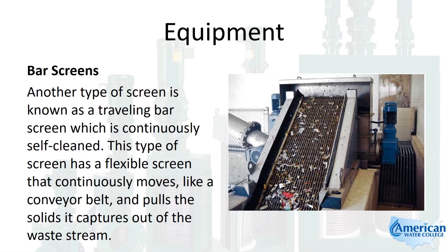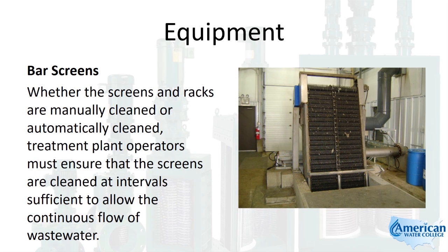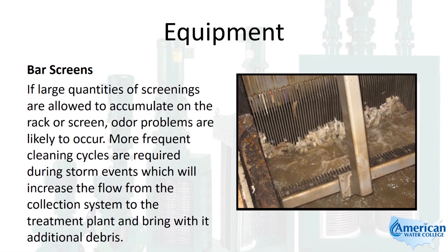A traveling bar screen is continuously self-cleaned, with a flexible screen that moves like a conveyor belt, pulling captured solids out of the waste stream. Whether screens and racks are manually or automatically cleaned, operators must ensure cleaning occurs at intervals sufficient to allow continuous flow of wastewater. More frequent cleaning cycles are required during storm events, which increase flow and bring additional debris from the collection system.